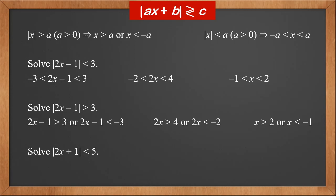Solve the modulus of 2X plus 1 is less than 5. Then 2X plus 1 is between minus 5 and 5. Subtract 1, and we get 2X is between minus 6 and 4. Divide by 2, and we get the solution as X is between minus 3 and 2.